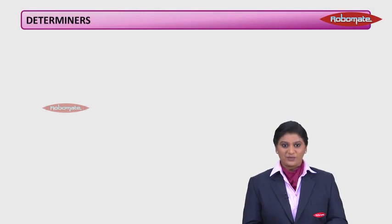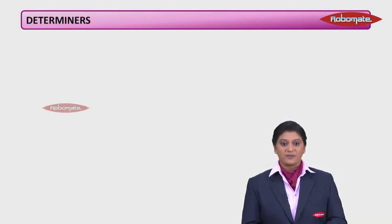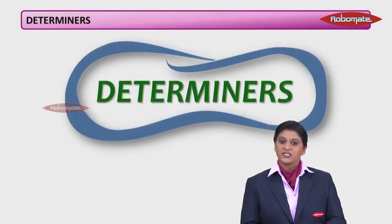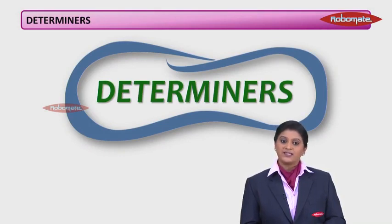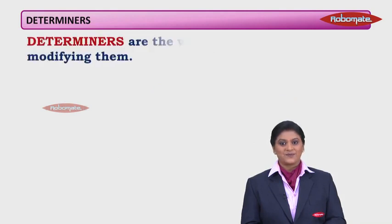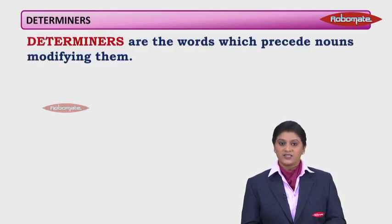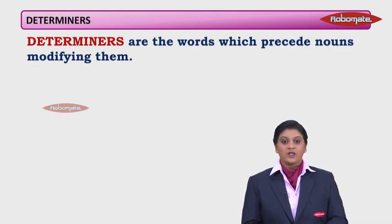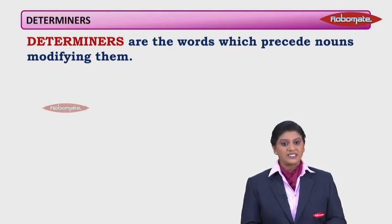Hi, I'm Ratnali Sharma and we are going to start with a new topic in grammar: determiners. In the first place, let us have a look at the definition of determiners. Determiners are the words which precede nouns modifying them. Now there are a lot of terms that we used in the definition — let us have a look at them in detail.